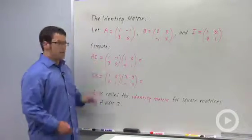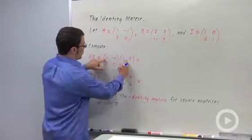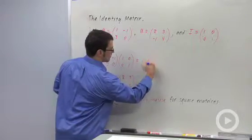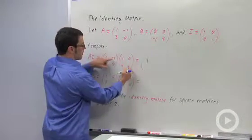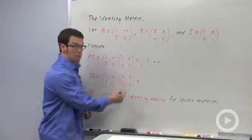I first want to multiply A times I. So going across, 1 times 1 is 1, plus 0 is 1, 0 minus 1 is negative 1, 3 plus 0 is 3.